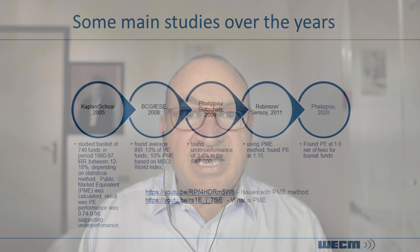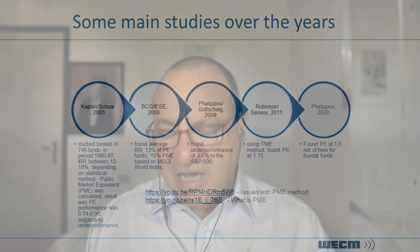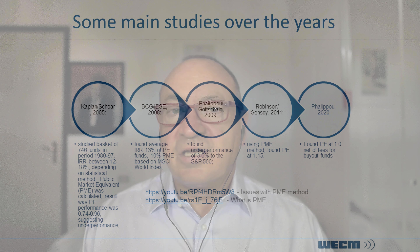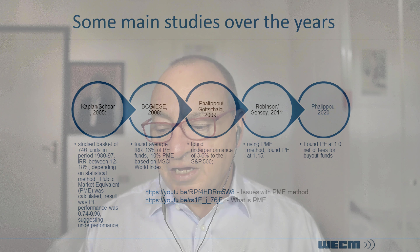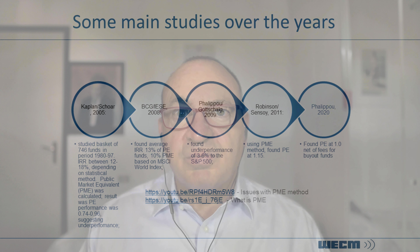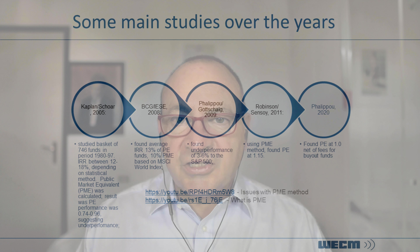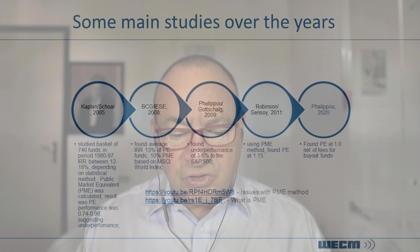If you look up Ludovic Philippo on LinkedIn you'll find some quite interesting comments. Broadly, the academic studies over the years seem to suggest that private equity as an asset class doesn't perform particularly better than the stock market on average, whereas many industry players, particularly large funds, would claim they outperform the stock market by around 3% a year. Measuring the performance is complicated statistically, so it's important to know what the debate is.